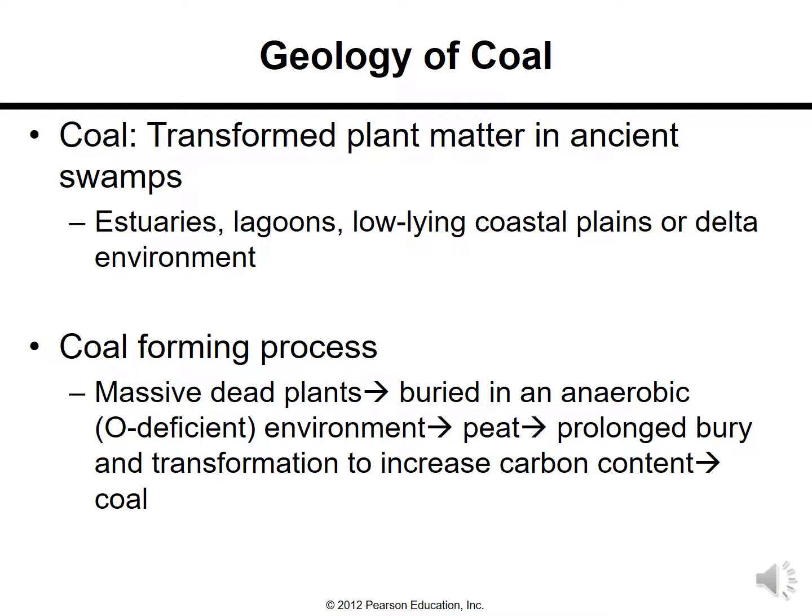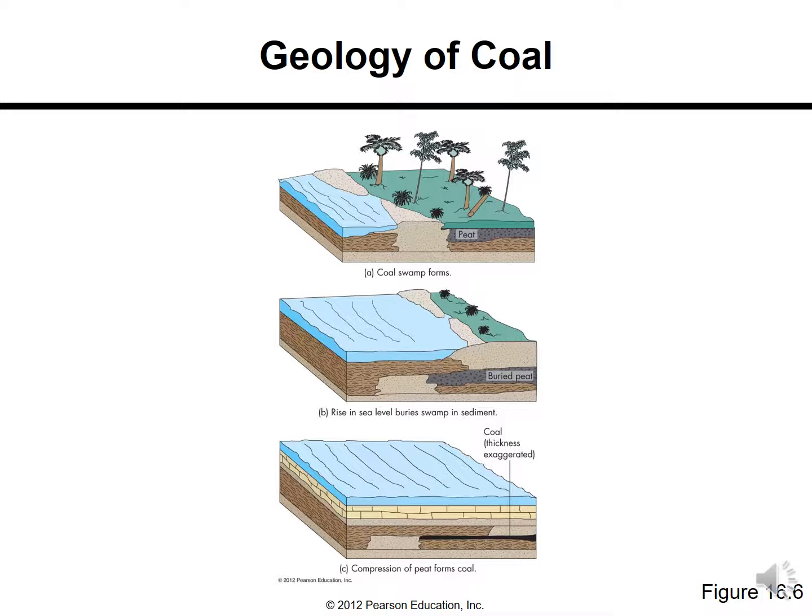Coal is transformed plant matter from ancient swamps. Plant material buried within sediments becomes coal, while animal debris buried within sediments over time becomes oil or petroleum. Coal forms in environments like estuaries, lagoons, low-lying coastal plains, or delta environments. The coal-forming process involves massive dead plants buried in an anaerobic (anoxic) environment with no or less oxygen. They become peat, and with prolonged burial and transformation, carbon content increases to form coal.